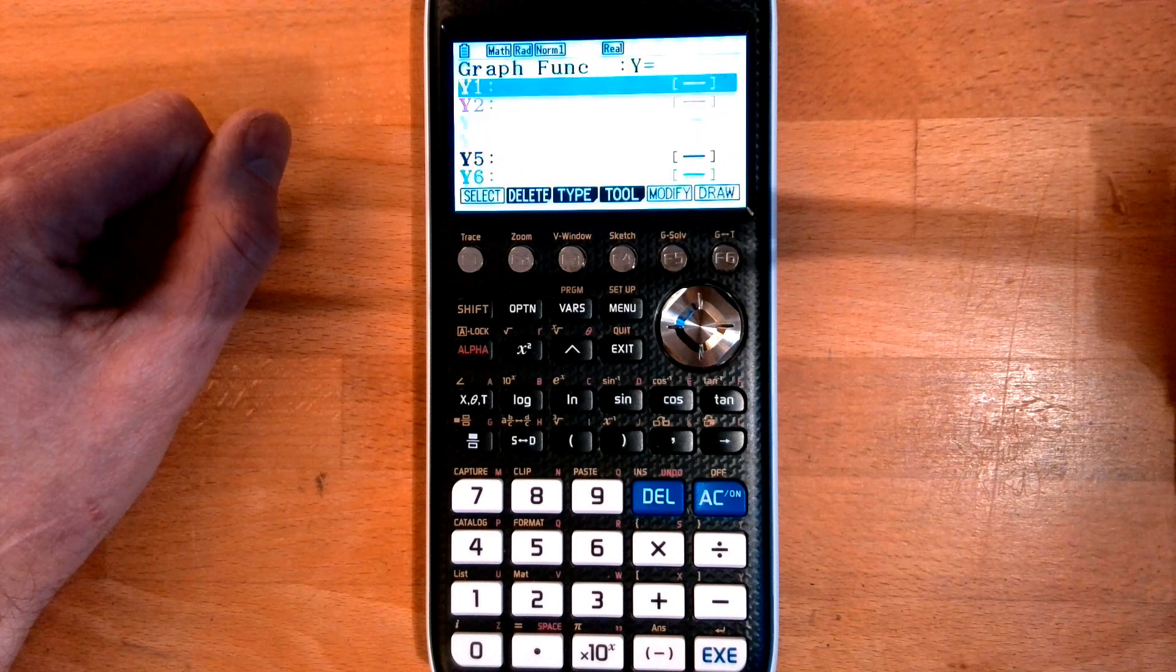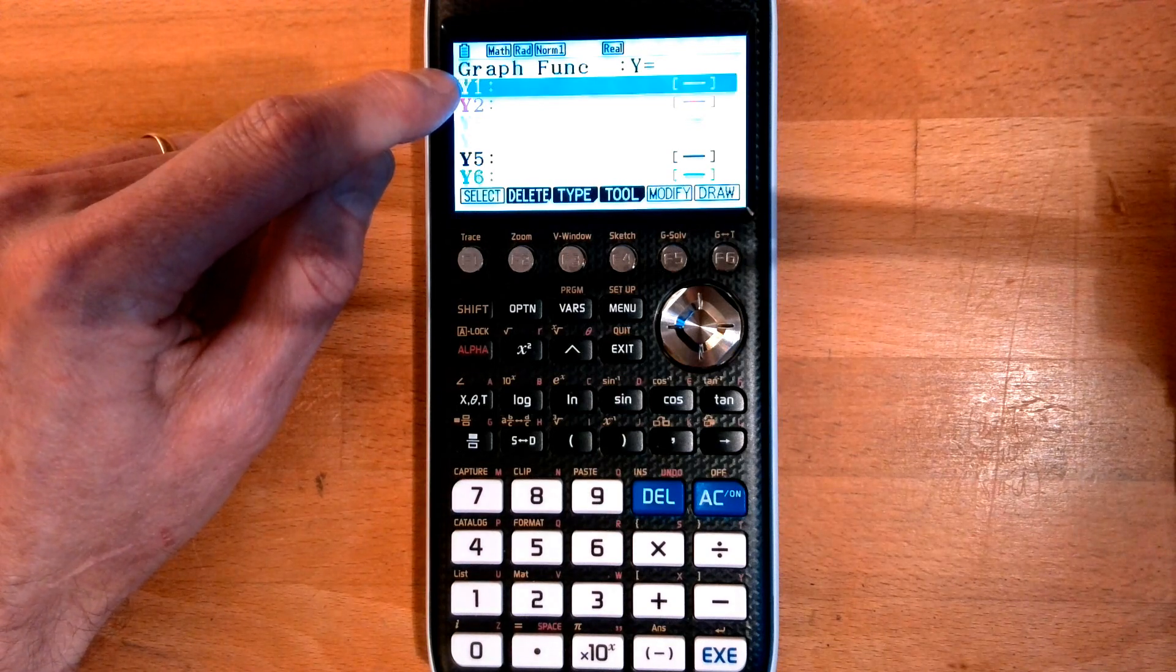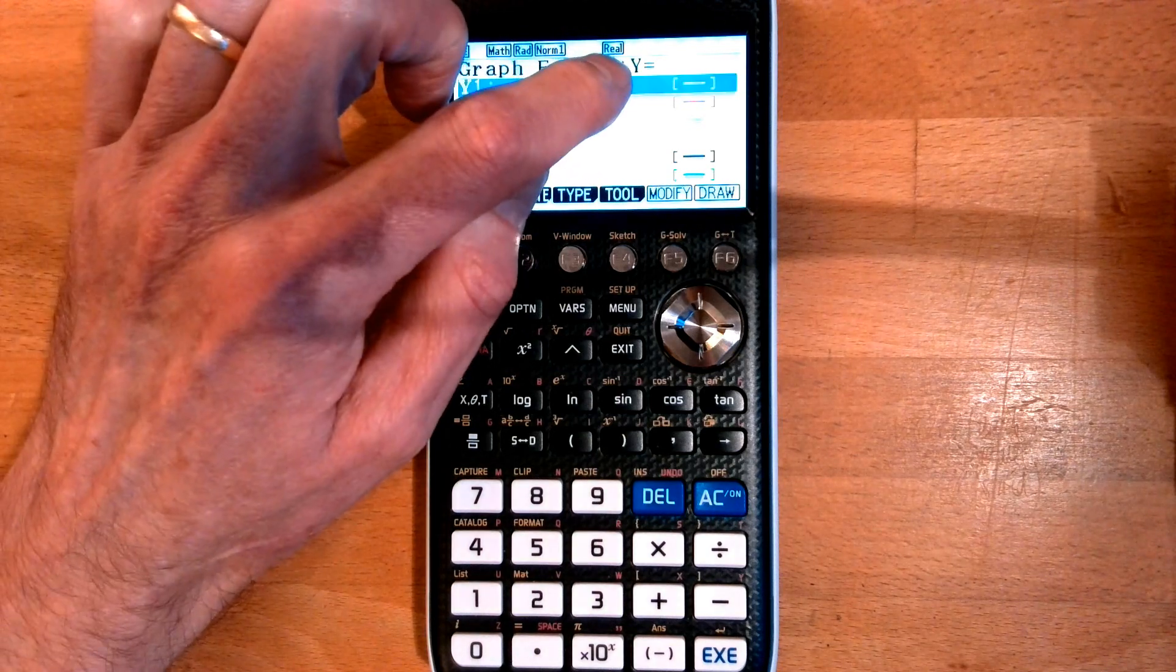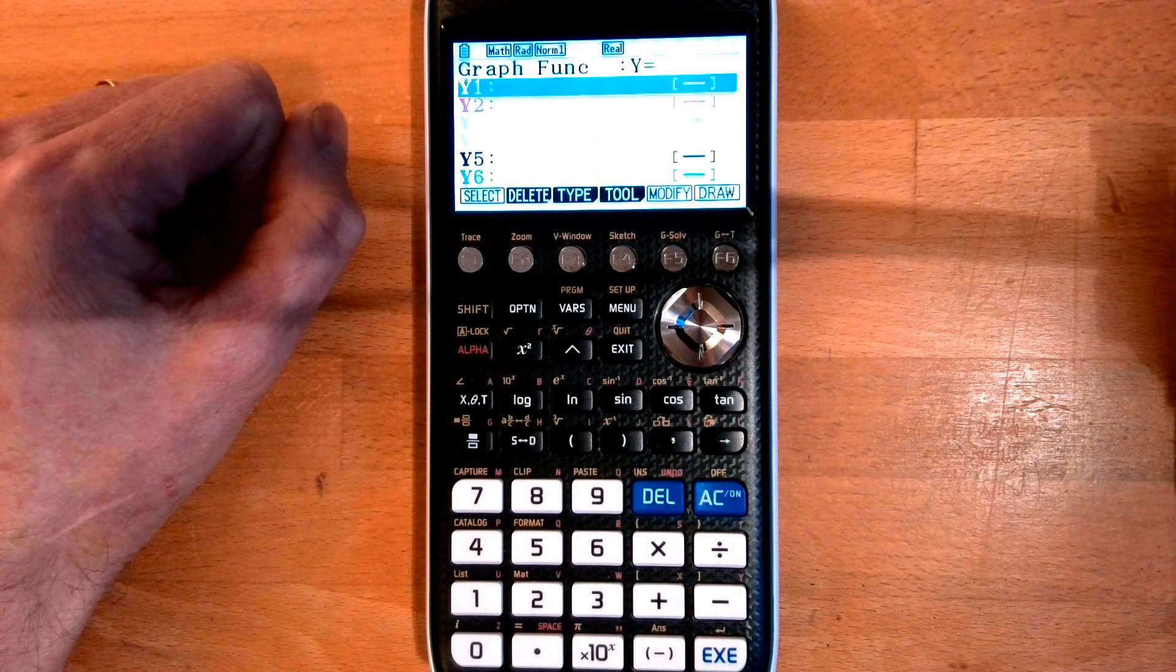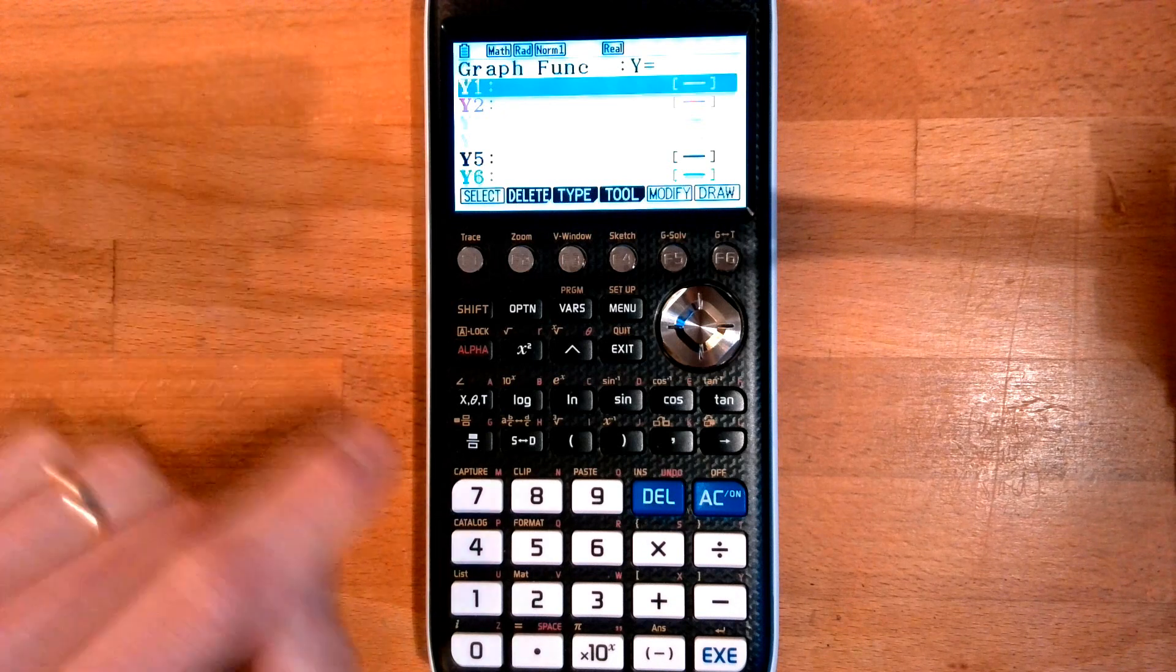These are y equals graphs, so that's the default setting. I can change that if I want. I'm going to plot y equals x squared, so I just type in this button here is my x button.